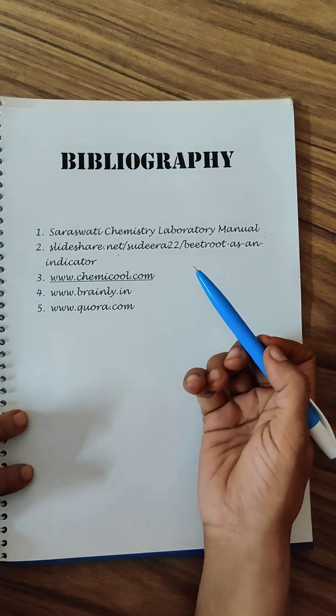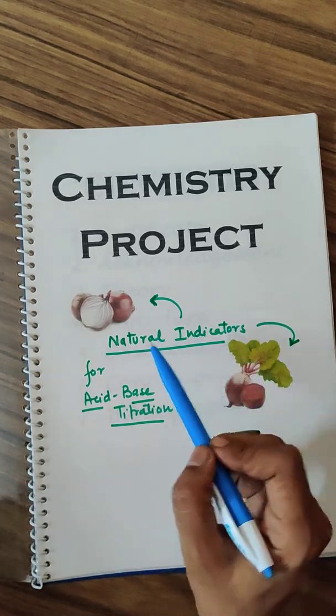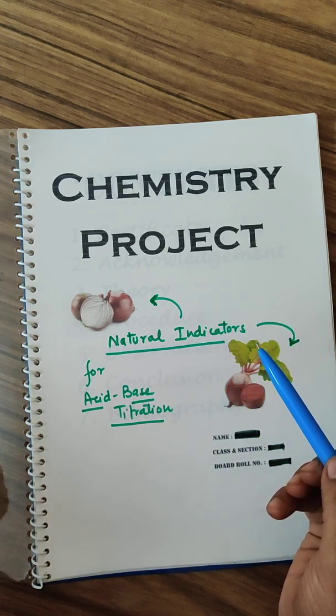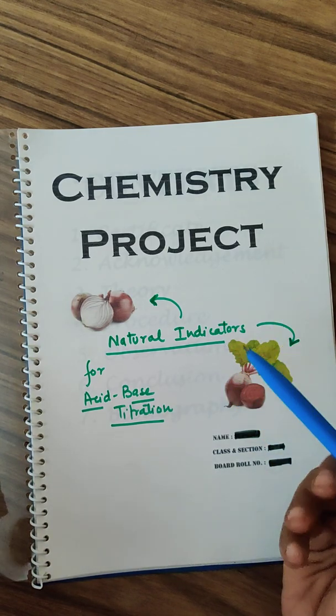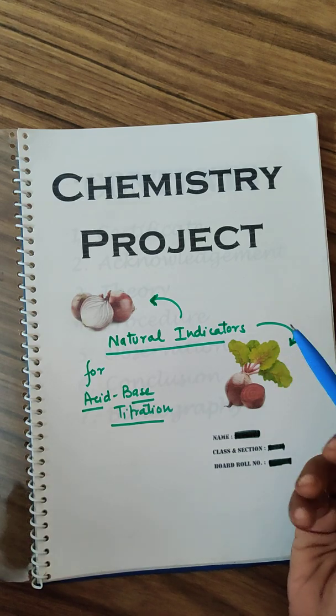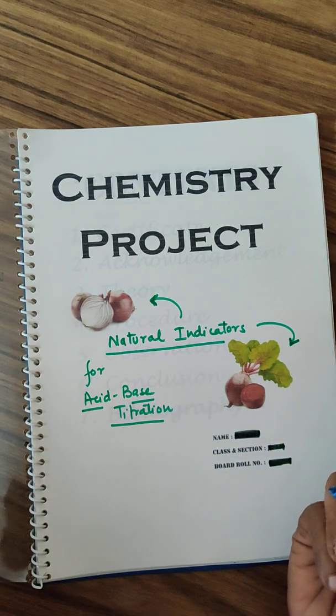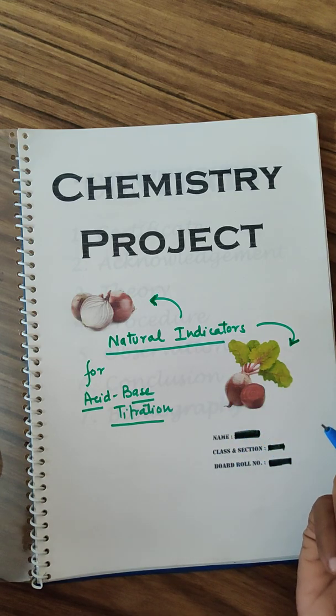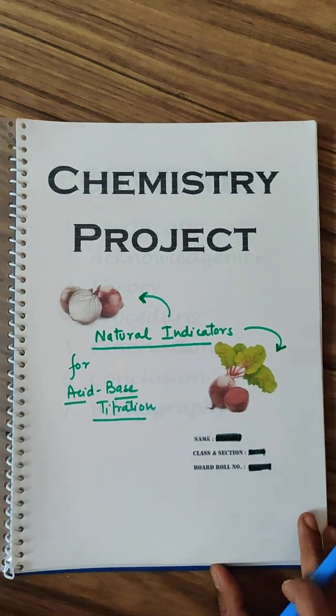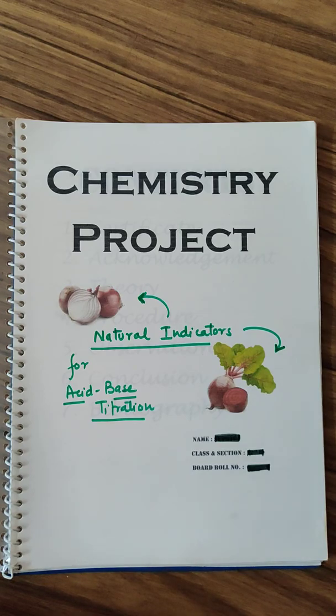I hope I have helped you with another project. Variety can be added to it as I already told you. The project is on natural indicators and there are many natural indicators. Just follow the same procedure. You can use any other indicators also and then compare it to the synthetic indicator that is phenolphthalein for an acid based titration. All the best, do well in life. Please keep sharing and liking the videos. Pass it on to somebody who has not done the project as yet, a friend of yours, a cousin of yours who is in class 12 appearing for the boards next year.